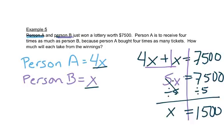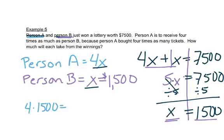We have to be a little careful though, because what does that really represent? This says X is 1,500. Remember, person B got X, so person B got $1,500. But person A got four times X, so for person A, we have to do four times $1,500, and we get $6,000.